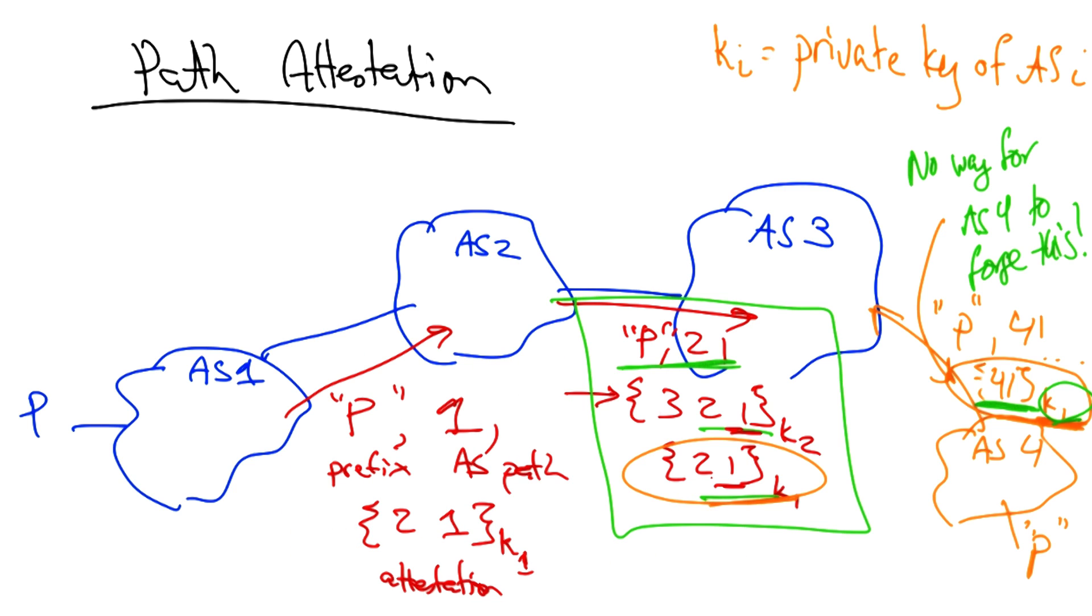This particular mode of signing not only prevents the type of hijacking that we explored, but it also prevents path shortening attacks. For example, when AS four receives the legitimate route to ASP through the path 3, 2, 1, it would be impossible for the AS to shorten that advertisement to say 3, 1, because it would somehow have to generate a path attestation for 3, 1 signed by its own secret key.